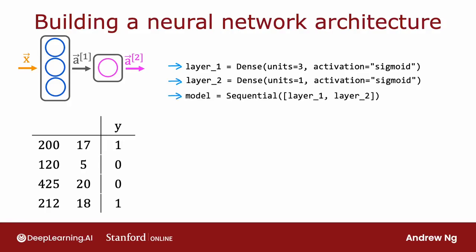and string them together to form a neural network. That's what the sequential function in TensorFlow does, which is it says, Dear TensorFlow, please create a neural network for me by sequentially stringing together these two layers that I just created.